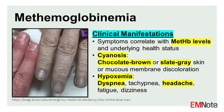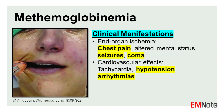Key clinical features include: (1) Cyanosis — often described as a chocolate brown or slate gray discoloration of the skin and mucous membranes, notably unresponsive to supplemental oxygen administration. (2) Symptoms of hypoxemia: dyspnea, tachypnea, headache, fatigue, and dizziness. (3) Signs of end-organ ischemia: chest pain, altered mental status, confusion, seizures, and coma in severe cases. (4) Cardiovascular effects: tachycardia, hypotension, and cardiac arrhythmias, particularly in severe cases.